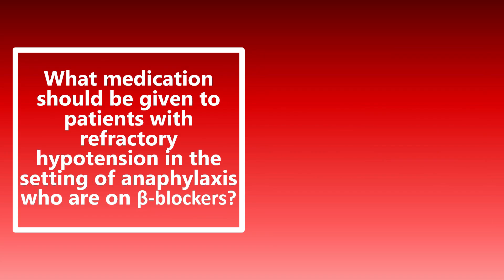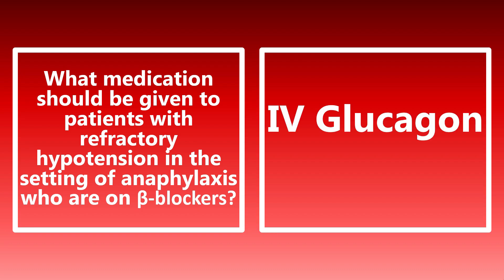What medication should be given to patients with refractory hypotension in the setting of anaphylaxis who are on beta blockers? The answer is IV glucagon. These patients have blockade of their beta receptors, which can prevent epinephrine — the mainstay of treatment — from binding. IV glucagon has positive inotropic and chronotropic effects not mediated through beta receptors. So if the patient is still hypotensive despite epi, consider IV glucagon.